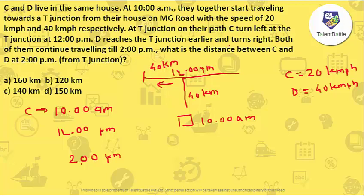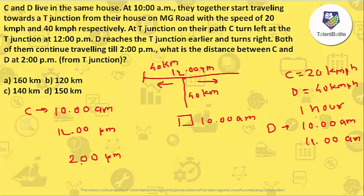D reaches the T-junction earlier and turns right. Both started at 10 am, and the distance to the T-junction is 40 km. D's speed is 40 kmph, so D covers 40 km in 1 hour, reaching the T-junction at 11 am. D then turns right and continues traveling until 2 pm — that's 3 hours. In 3 hours at 40 kmph, D covers 120 km on the right direction.